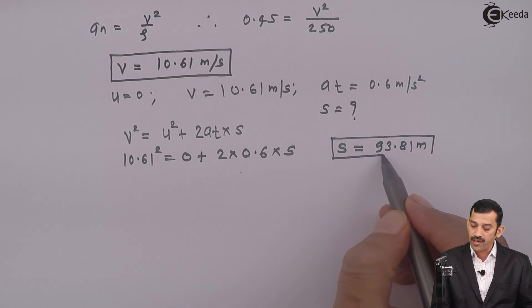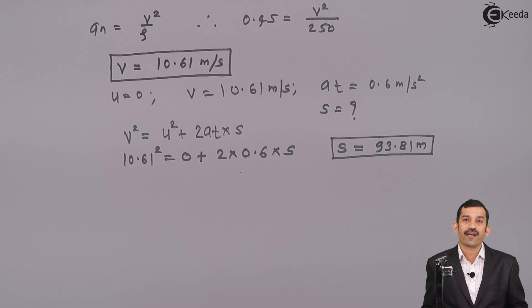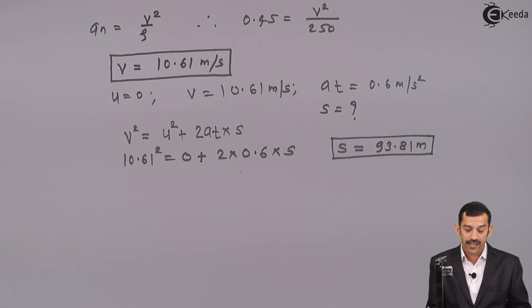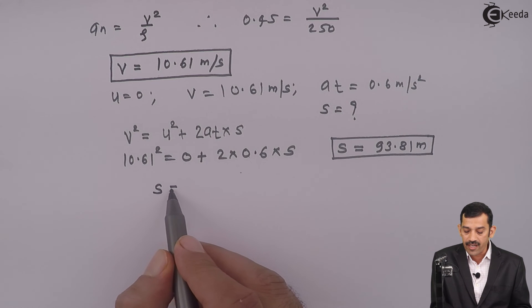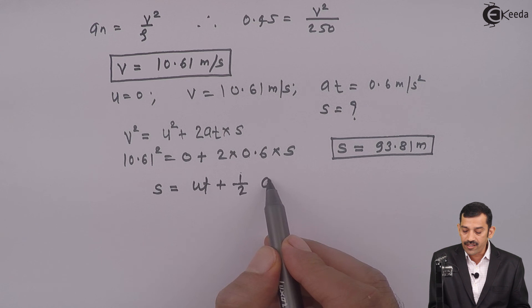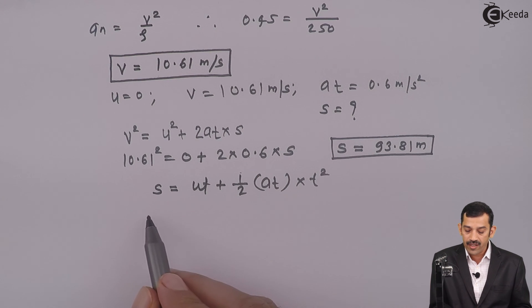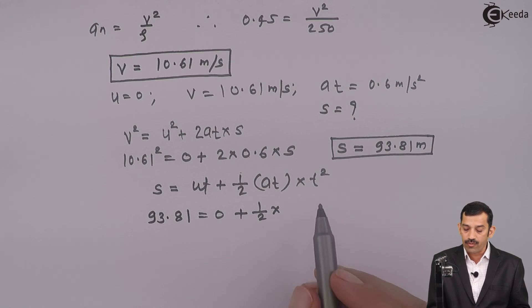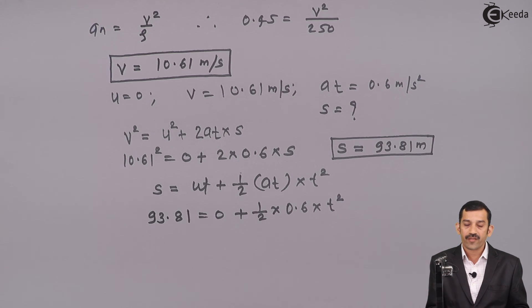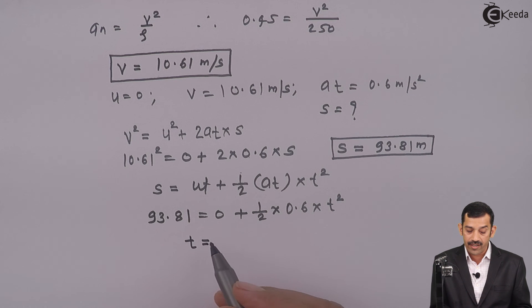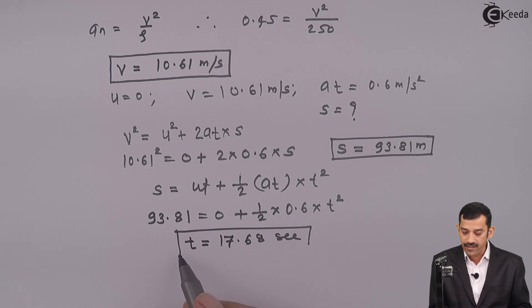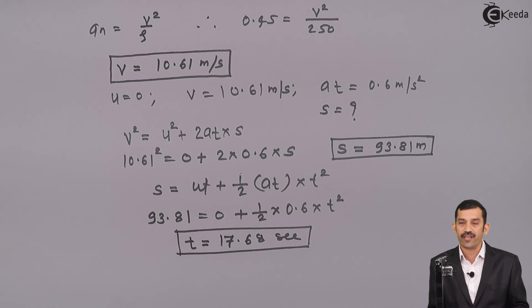Now for the second part, we need to find the time the car travels. With initial velocity u = 0, final velocity 10.61 meters per second, tangential acceleration AT = 0.6, and distance S = 93.81 meters, we use the kinematic equation S = UT plus half AT times T squared. Substituting: 93.81 = 0 plus half times 0.6 times T squared. Using the calculator, time T comes out to be 17.68 seconds. So the car travels for 17.68 seconds and covers a distance of 93.81 meters. Thank you.